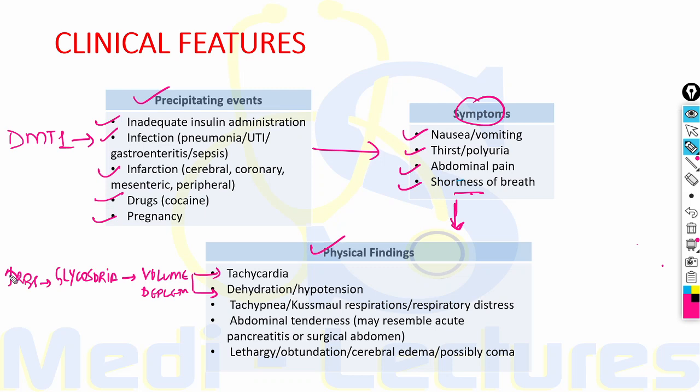Abdominal pain can be so severe that it mimics acute pancreatitis, which should be ruled out. Due to hyperglycemia and glycosuria, there is volume depletion which leads to tachycardia, dehydration, and hypotension. There can be tachypnea, and patients typically have a specific breathing pattern with fruity odor in the breath, secondary to metabolic acidosis and acetone, which is a ketone body formed in DKA — a classical sign of this disorder.